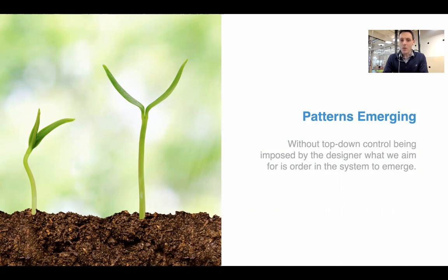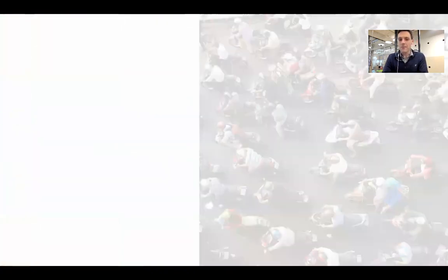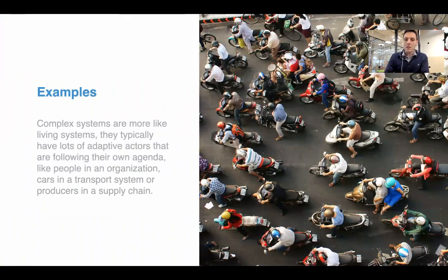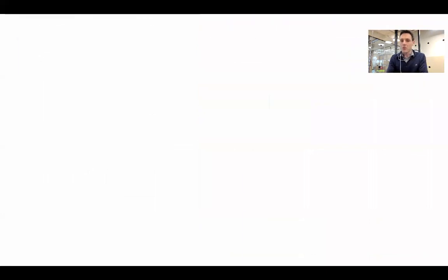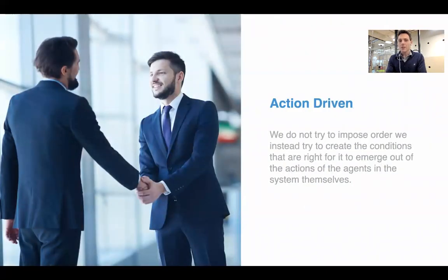We're asking how can we actually work with that instead of imposing order — working with local interactions to get the emergence of order. An example of this is traffic and traffic jams. It's a complex adaptive system with many adaptive agents in it. We can't really fully control those people, so we're going to have to work with what emerges, creating the context and working with the patterns that will emerge out of their interactions, like traffic jams. Not just traffic jams, but also producers in the supply chain or people in organizations. Emergence is a pretty universal phenomenon in all complex systems.